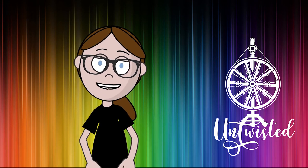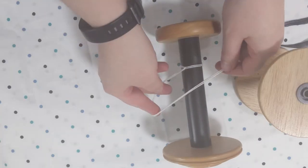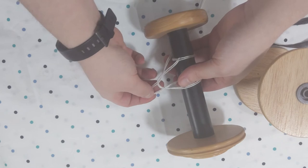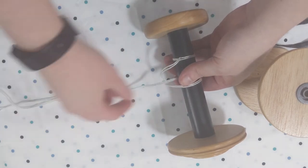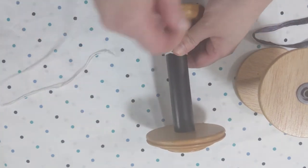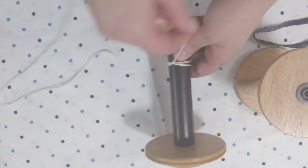This is a super easy fix. You'll just want to tie a second lark's foot knot. This time when you pull it tight, there's enough friction to keep the yarn from spinning around the bobbin, and instead it will wind onto your bobbin properly.